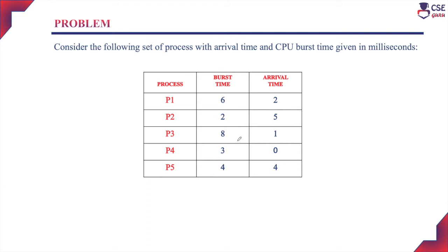In FCFS scheduling, the process which enters into the job queue first will be executed with the CPU first. Here, since the arrival time of each process is given, based on this arrival time the processes will be sequentially placed in the job queue, and in the same job queue order only, the process will be assigned to the CPU for execution.